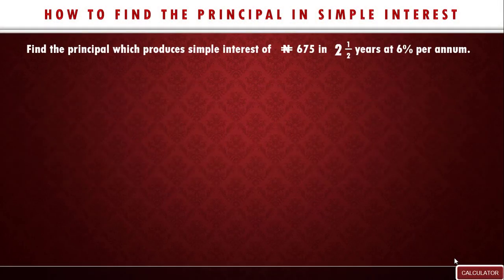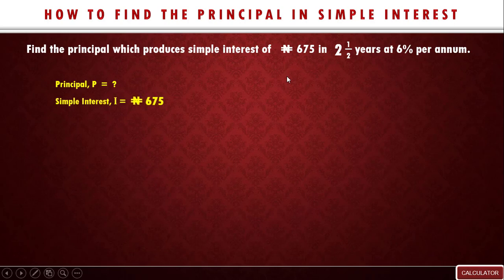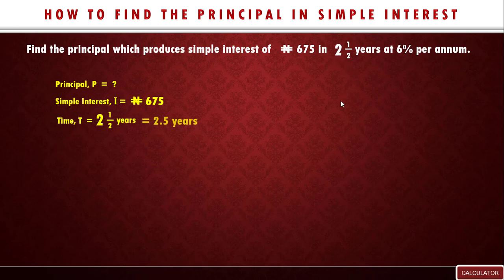Let's do example two. Find the principal which produces a simple interest of six hundred and seventy-five naira in two and a half years at six percent per annum. The first thing is to list out what we're given. Principal is unknown. Simple interest is 675 naira. Time is two and a half years, which converts to 2.5 years. Rate is six percent.